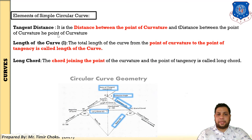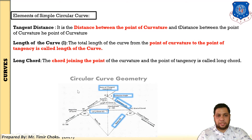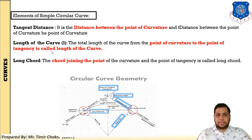Eighth, tangent distance: the distance between the point of curvature and the point of tangency — meaning from the beginning to the end of the tangent — is called the tangent distance. Ninth, length of curve: the total length of the curve from the point of curvature to the point of tangency is called the length of the curve.